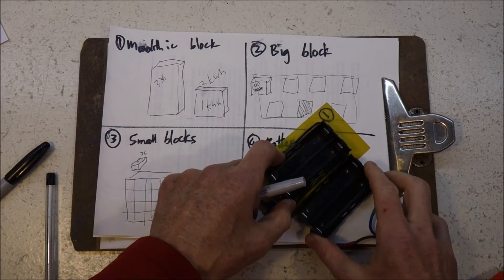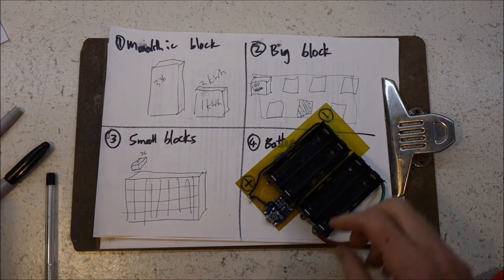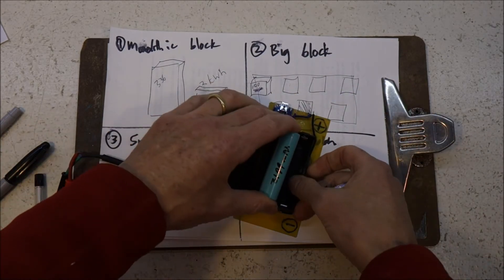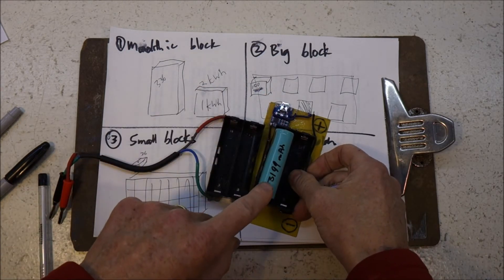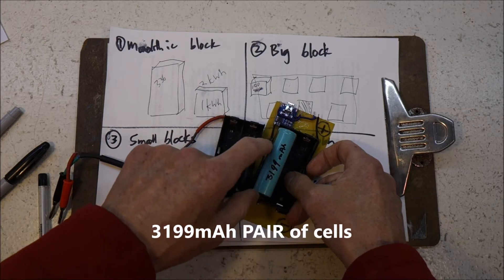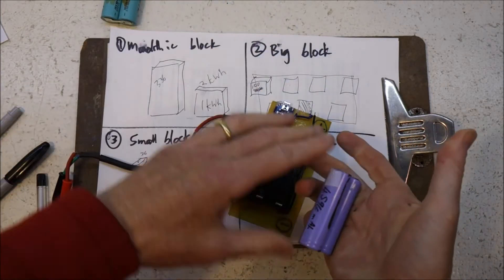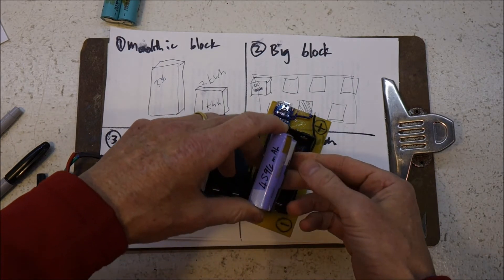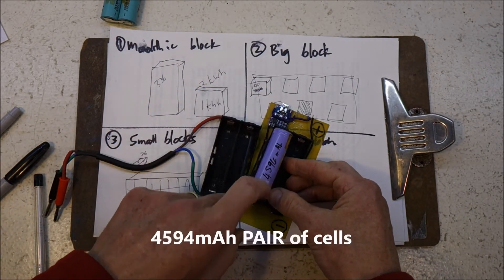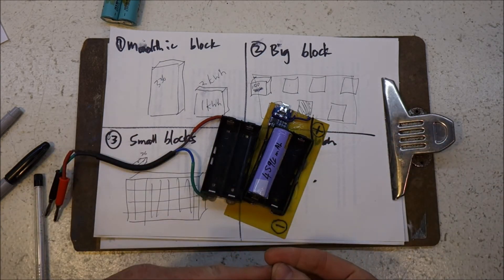If you want to slowly increase the capacity of your 2kWh pack, you could say you had a 3199 mAh cell in your pack. You can just yank that out, bung in a higher capacity cell, 4594, and that would incrementally raise the capacity of your cell.